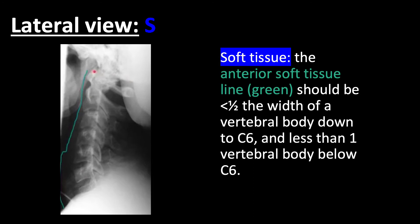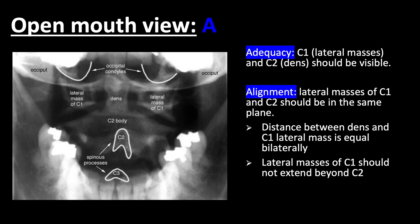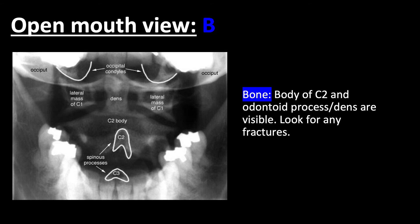As you can see here, the anterior or pre-vertebral soft tissue line is seen in green, and should be less than half the width of the vertebral bodies down to C6, and below C6 there should be less than the width of one vertebral body. The open mouth view visualizes C1 and C2, and it is important that you see the lateral masses of C1 and the dens of C2. For alignment, the lateral masses of C1 and C2 should be in the same plane respectively, and the distance between the dens and C1 lateral masses should be equal bilaterally. If not, this could be due to rotation of the X-ray or something more sinister. The lateral masses of C1 should also not extend laterally beyond C2. If there is displacement of C1 lateral masses, this could be indicative of a C1 fracture or Jefferson fracture. For bone, you will want to look for any fractures in the body of C2 or in the dens or odontoid process, otherwise known as a peg fracture.